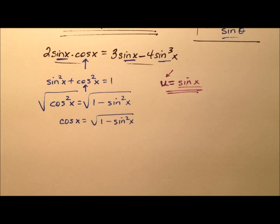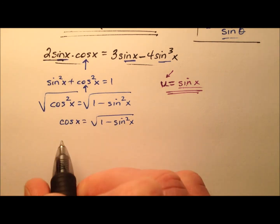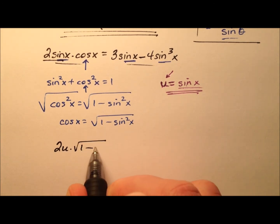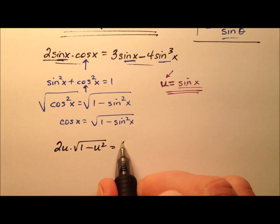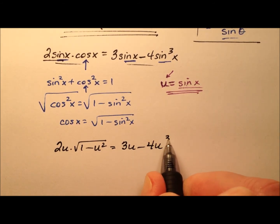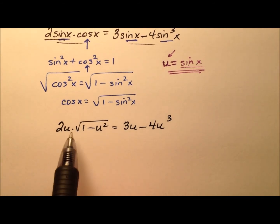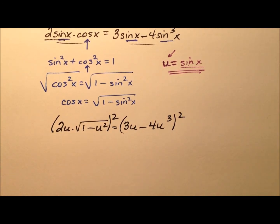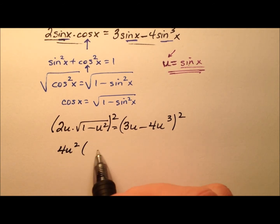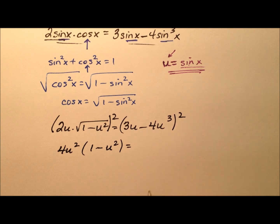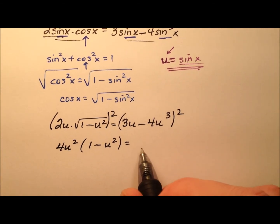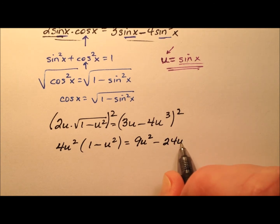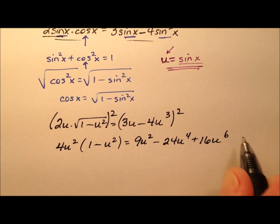Making both substitutions, the left side becomes 2u times the square root of 1 minus u squared, and the right side equals 3u minus 4u cubed. Squaring both sides to eliminate the radical gives 4u squared times (1 minus u squared) on the left. The right side is a square of a binomial: 9u squared minus 24u to the fourth plus 16u to the sixth.